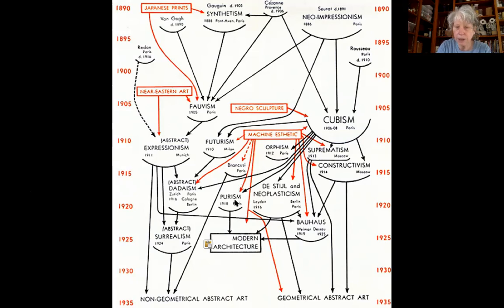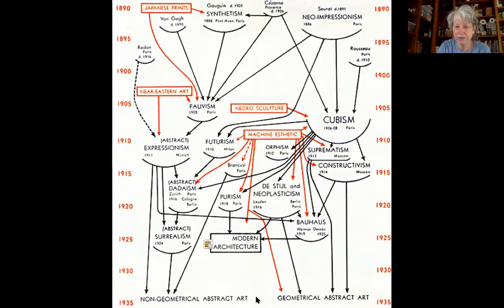Those two styles cross-pollinated with many other things, and this is where it gets complex. We're going to talk about Dadaism and Surrealism next — Wednesday we'll talk about Dada, and next week about Surrealism. The bottom line is that Barr thought there were two categories of abstraction: non-geometrical abstraction and geometrical abstraction.